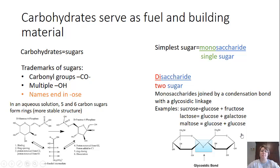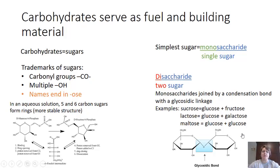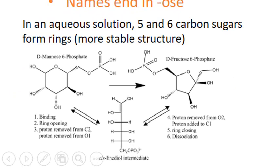Now we're getting into our four macromolecules. Carbohydrates are our first one and they serve as our fuel and building material — carbohydrates are simply sugars. Trademarks of sugars include a carbonyl group and multiple hydroxyl groups, and almost all carbohydrate names end in -ose. Carbohydrates exist in a linear form, but when a sugar with five or six carbons is placed in an aqueous solution, it will typically form rings because that's a more stable structure.